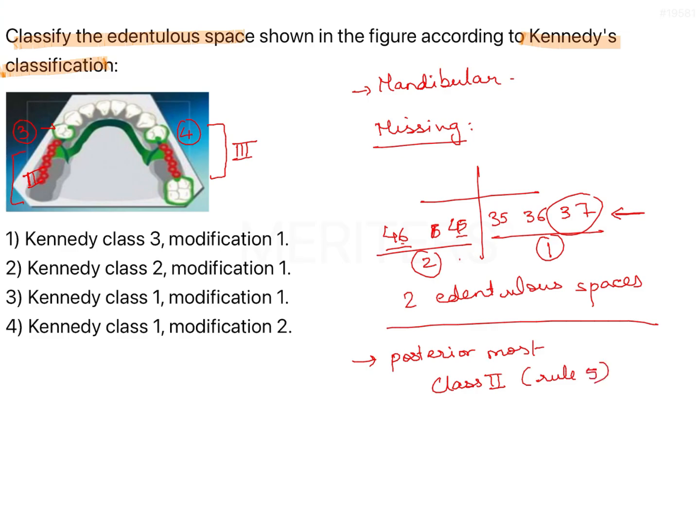The remaining edentulous areas are designated as numbers. So rule 6 and 7 will tell you that you don't have to count the number of teeth, you have to just count the edentulous areas and designate them as modification spaces. So here, this is one space, so this becomes modification 1.